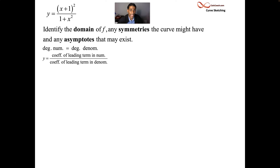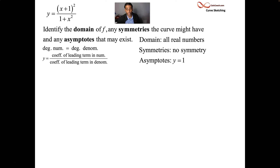When it comes to asymptotes, the degree of the numerator is equal to the degree of the denominator. So the ratio of their leading coefficients ends up as the horizontal asymptote. y equals 1 is a horizontal asymptote here.